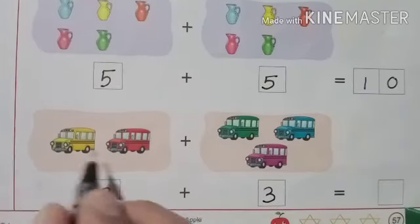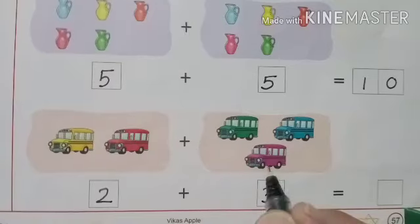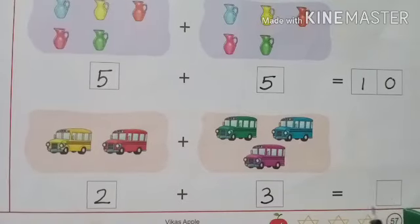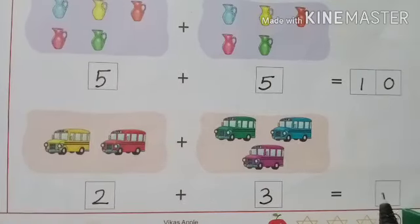All together, how much vans are there? 1, 2, 3, 4, 5. So, answer is 5.